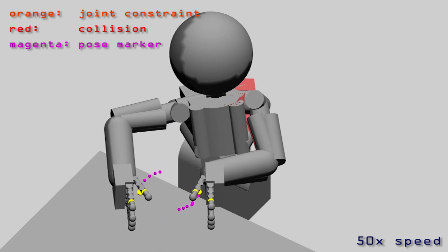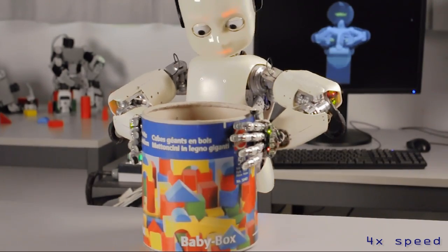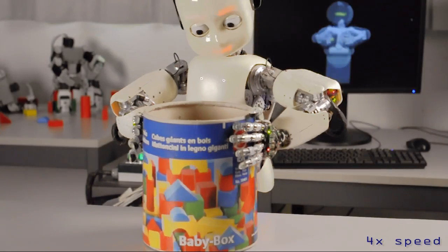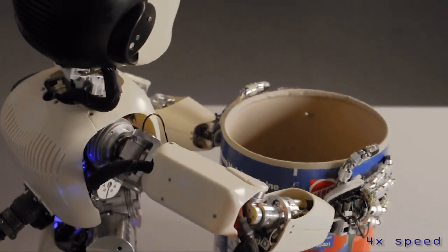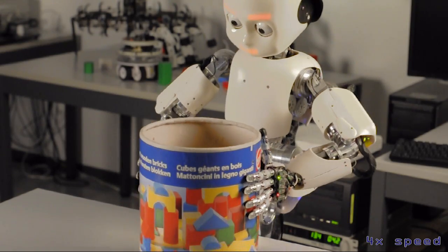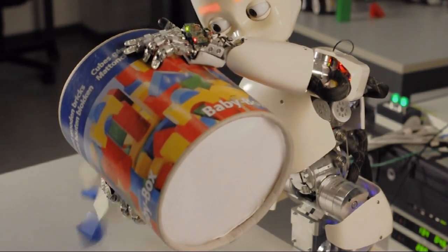With our method we can choose what part of the robot we want to move and which part we want to constrain. In this case we constrain the hands to move in parallel while changing their angle. This allows us to rotate the box on the table. We can easily choose another direction to rotate the box around a different angle.